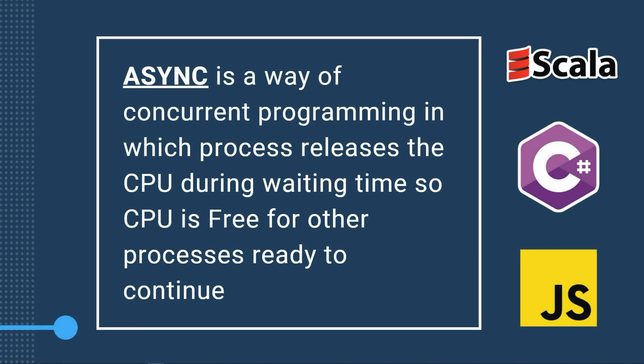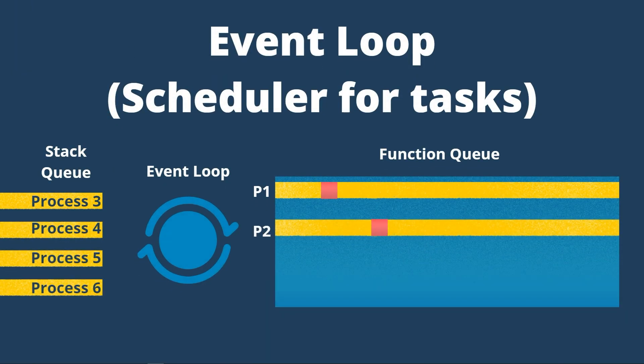To summarize: async is a way of concurrent programming in which a process releases the CPU during waiting time so the CPU can be free for other ready processes. The first language to implement async was C#, then JavaScript in ES7, then Scala, Dart, and Go with goroutines. To decide which CPU time goes to which task, we need an event loop — the maestro that conducts the orchestra of tasks. The event loop knows what tasks are running and what tasks are waiting; it selects from a queue, suspends tasks that need to wait, then checks and resumes them when done.